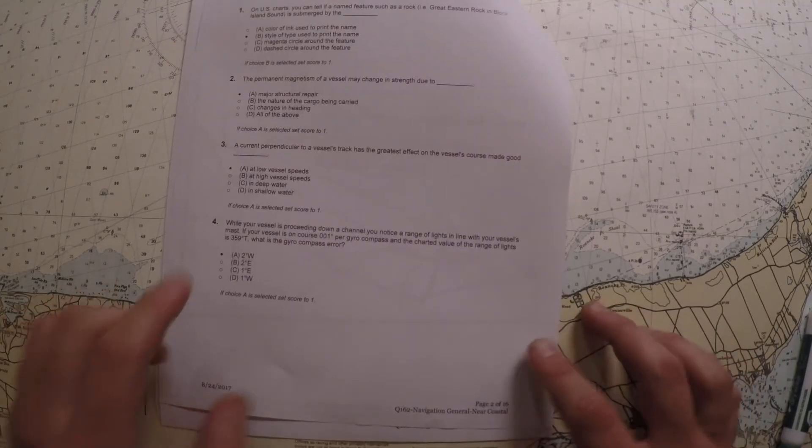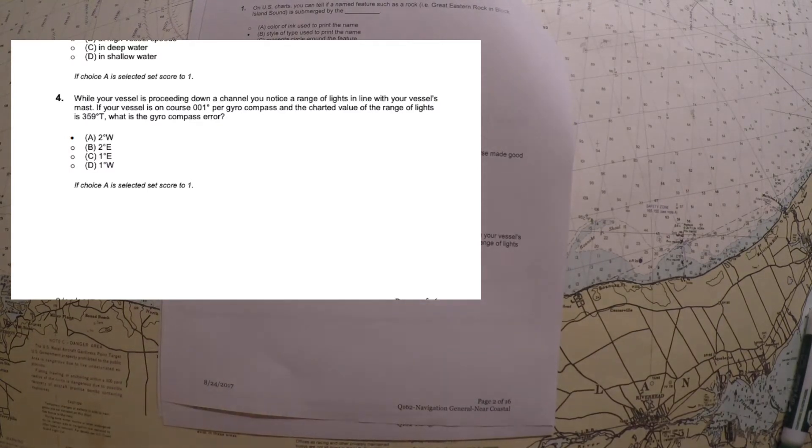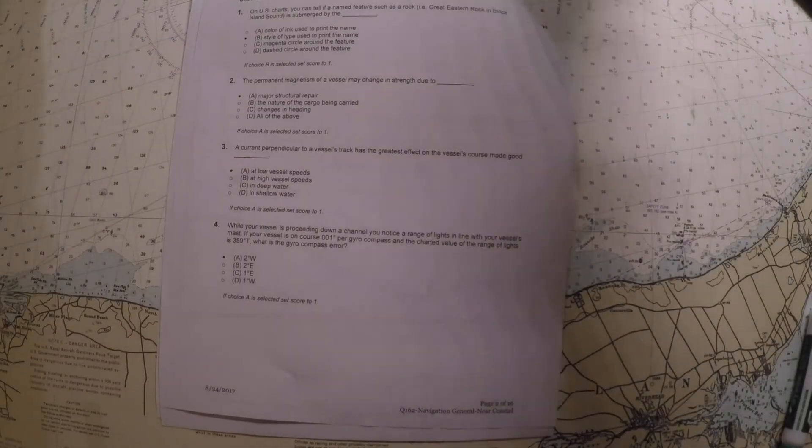All right, taking a look at question number four. It says while your vessel's proceeding down a channel, you notice some range lights in line with your mast. It gives you your course of 001 degrees per gyro compass and a charted value for the range.